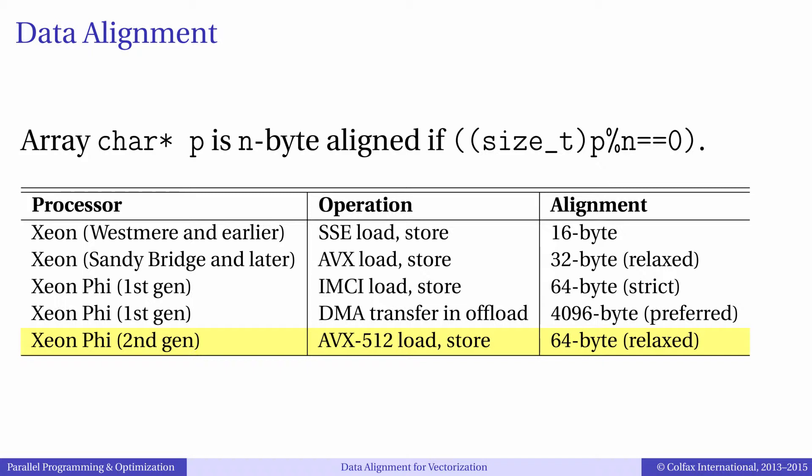However, alignment may be important for some operations other than vectorization. For example, to offload to Xeon Phi coprocessors, it is beneficial to align offloaded arrays to a 4-kilobyte boundary for the most efficient utilization of direct memory access.